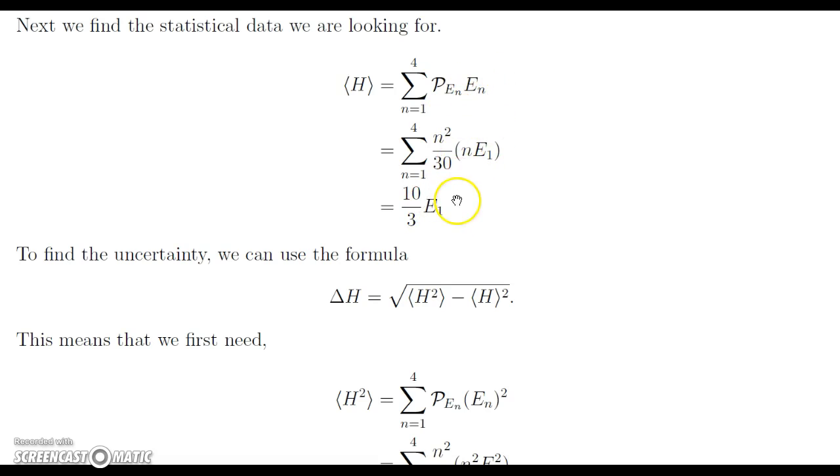So we have this sum here, and we can plug in n squared over 30 for the probability, and n times E1 for the energy value. And when we take the sum, we get 10 thirds times E1 is our expectation value.